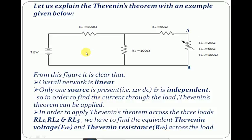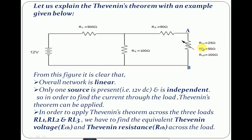Let us explain Thevenin's theorem with an example. When solving any linear network using Thevenin's theorem, you may encounter three types of problems: when the source is independent, when the source is dependent, and when the source is a mixture of dependent and independent. From this figure, it is clear that the overall network is linear and independent, with only one source present — a 12V DC source. Here we are having three loads: RL1, RL2, and RL3. To find the current flowing through each load, we must find the equivalent Thevenin voltage and equivalent Thevenin resistance RTH across the load terminal AB.